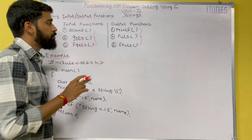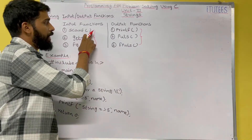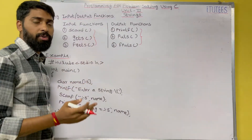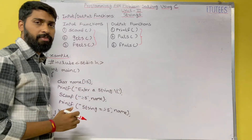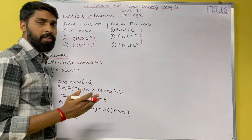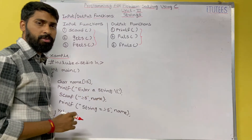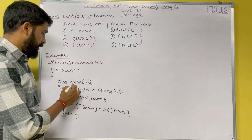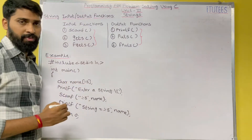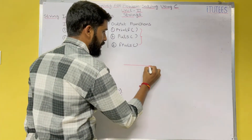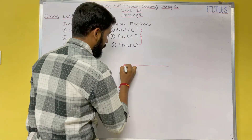First we are going to see scanf and printf to read the string from the keyboard and to print the string onto the monitor. Here, name is of size 15 — that means name is a character array.